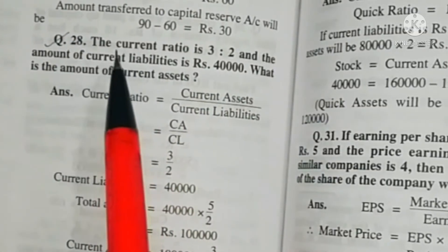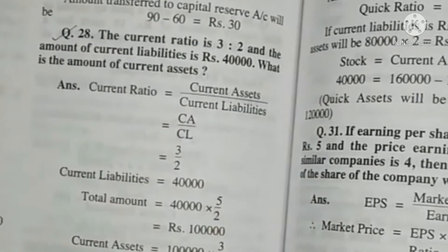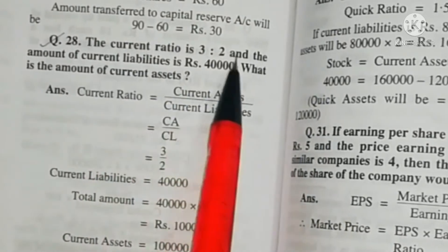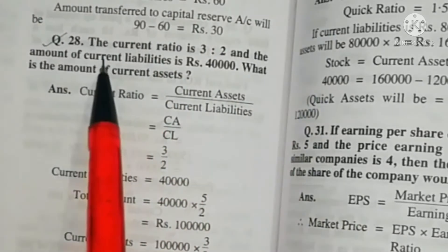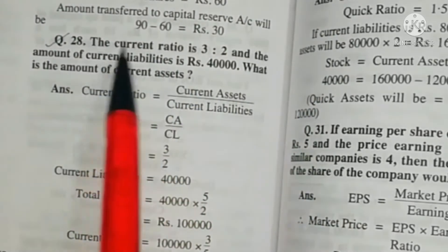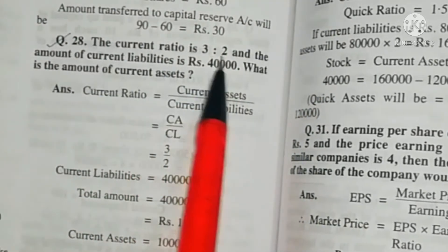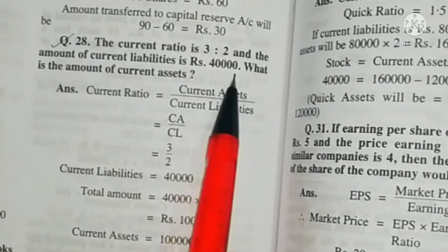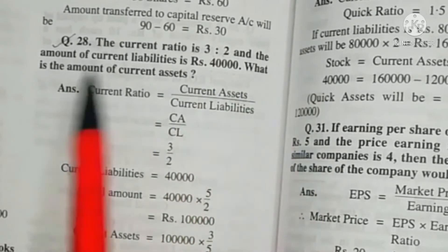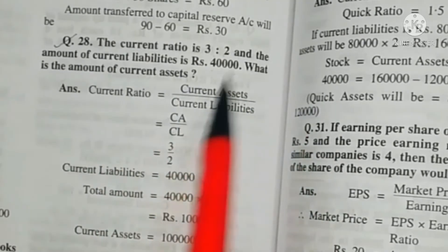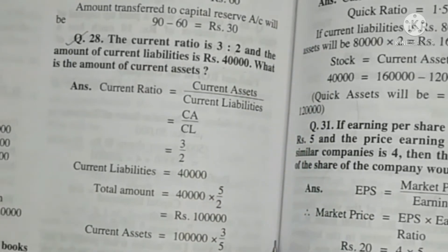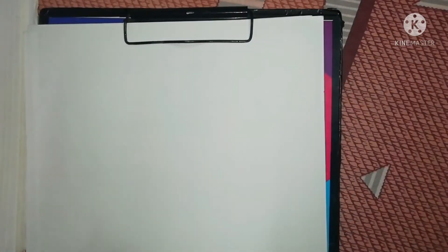Now move to the next question, number 28. The question is: the current ratio is 3:2 and the amount of current liabilities is rupees 40,000. What is the amount of current assets? In this question the current ratio is given as 3:2 and current liabilities are also given as rupees 40,000.